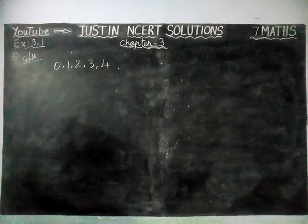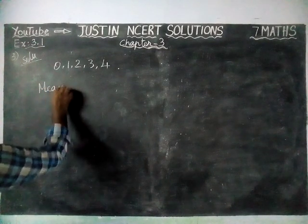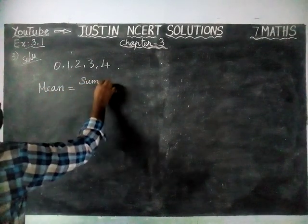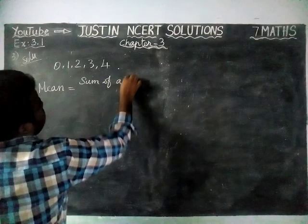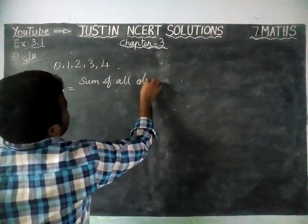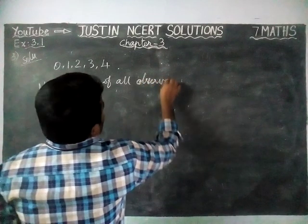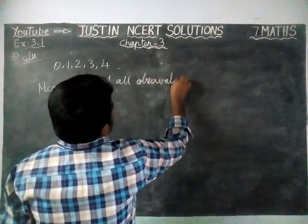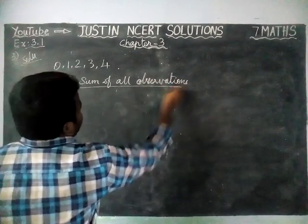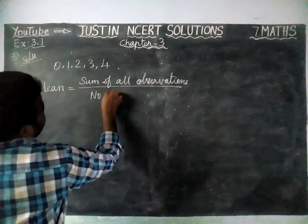Mean is equal to the sum of all observations divided by the number of observations.